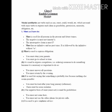Now we are going to study each one of them in detail with their uses and examples. Let us start with 'must'. Must is used for all persons in present and future tenses. The negative of must is 'must not' or 'mustn't', and the interrogative form is 'Must I?' Must has no infinitive and no past tense, and it is followed by the infinitive without 'to'.